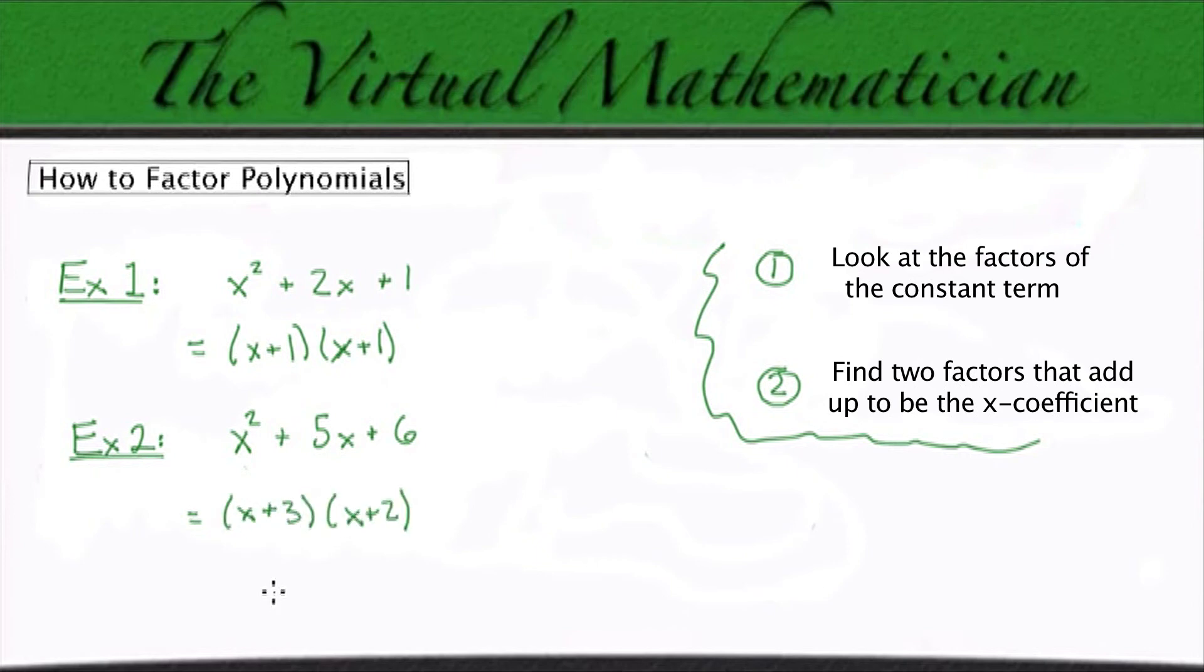And that's it. That's how we factor polynomials. Now, if you'd like to learn if you factored it correctly, you can watch my video on the FOIL method, which will show us how to multiply these two first degree polynomials back out to see if we got our original polynomial that we started with.